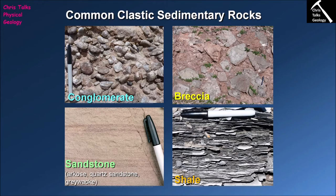Shale is a very common rock, especially in low-energy environments like lakes or the deep ocean. Very often shales, because they are dominated by clay minerals, will take on a rather distinct texture — very fine layers which we refer to as laminations. This laminated texture is a reflection of the minerals that make up the rock, and we'll see exactly how the compaction of these clay-rich sediments leads to the formation of this laminated texture.